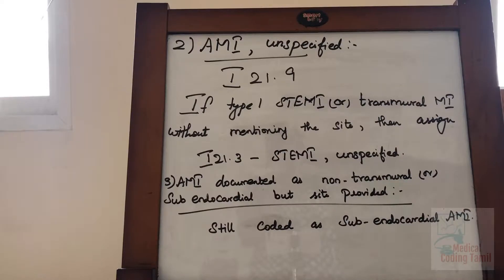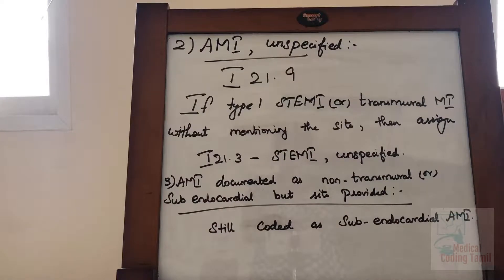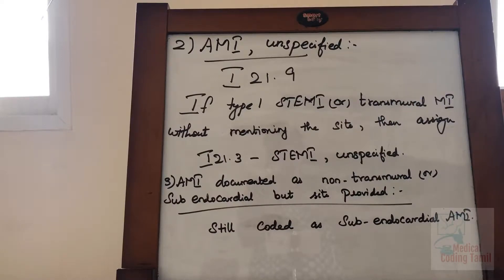Don't confuse: I21.9 is for AMI unspecified — Acute Myocardial Infarction unspecified — but I21.3 is for STEMI unspecified.